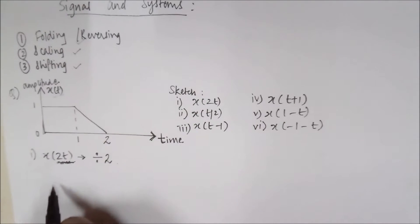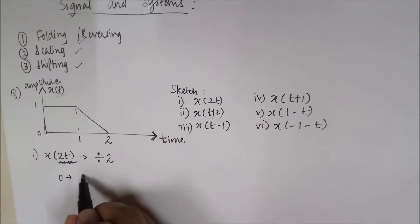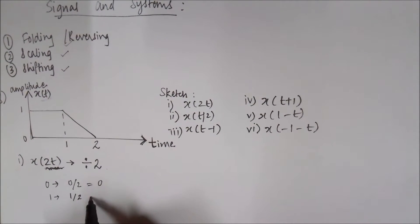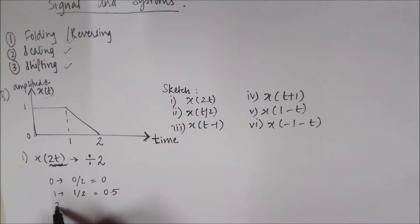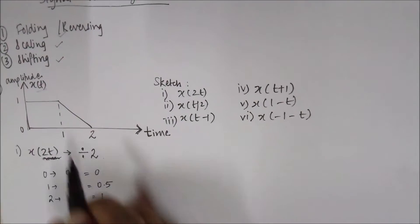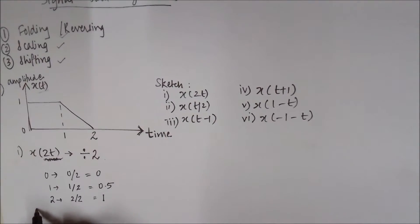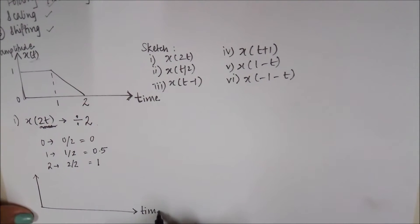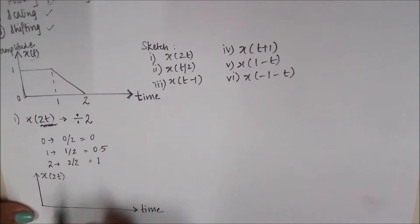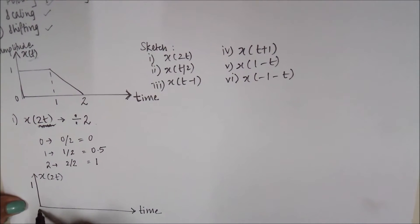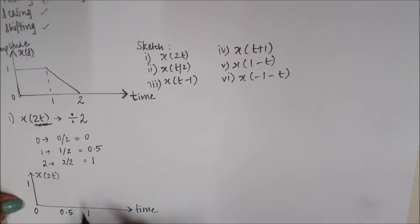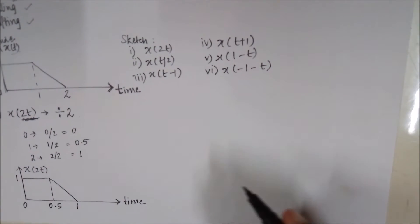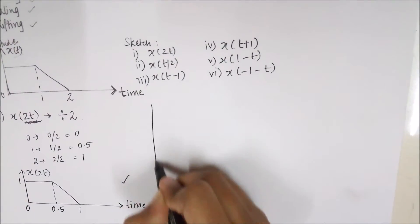We divide the time axis values by 2: 0 becomes 0/2 which is 0, then 1 becomes 1/2 which is 0.5, and 2 becomes 2/2 which is 1. The amplitude remains as it is. This is how the compressed signal will look.